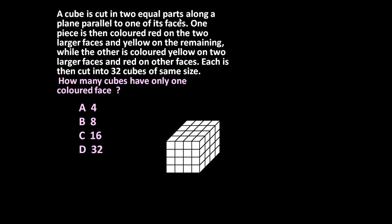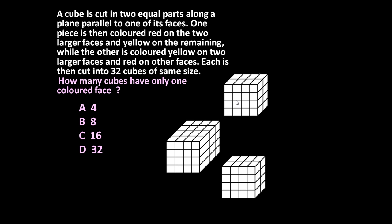This cube is cut into two equal parts along a plane parallel to one of its faces. If you cut it along this plane, each piece will have 32 cubes — one piece has 32 and the other also has 32.